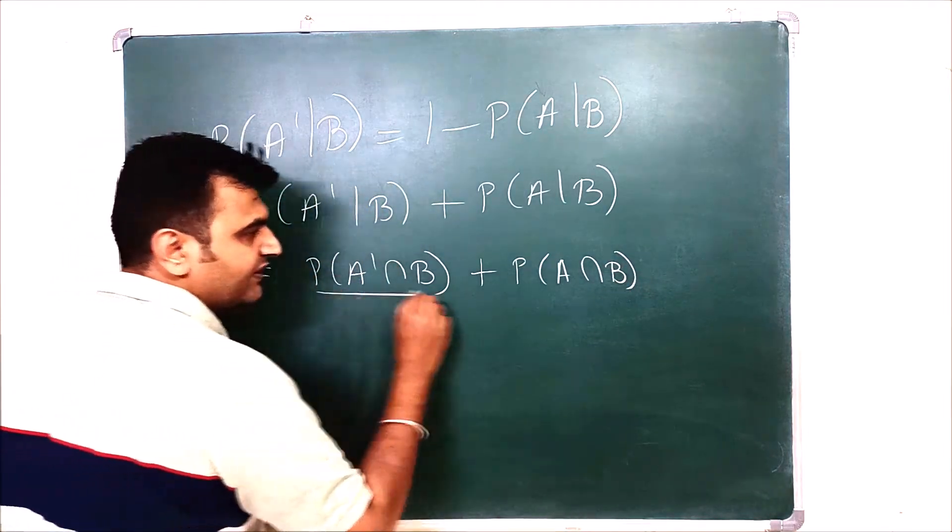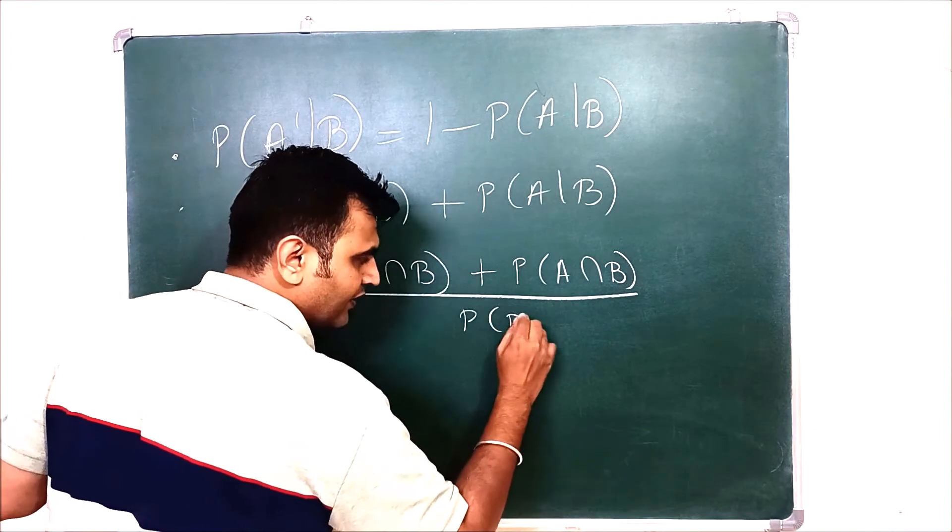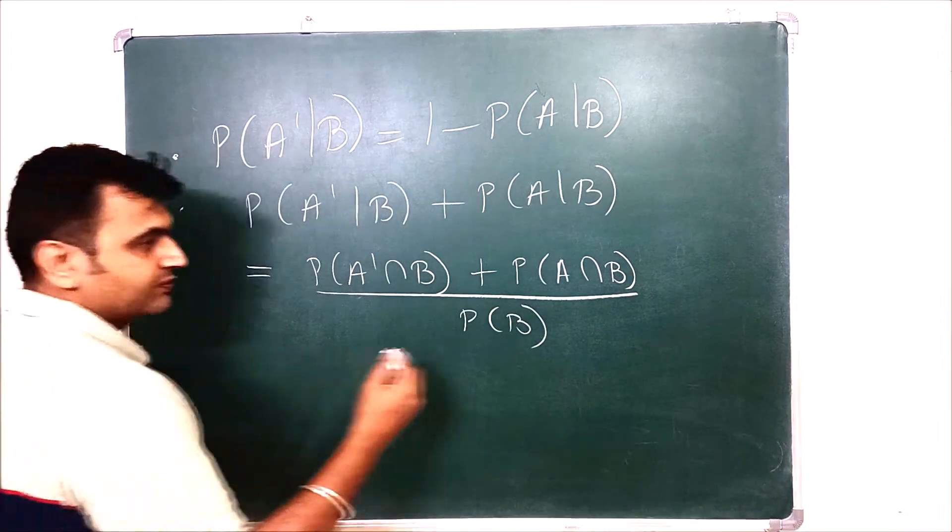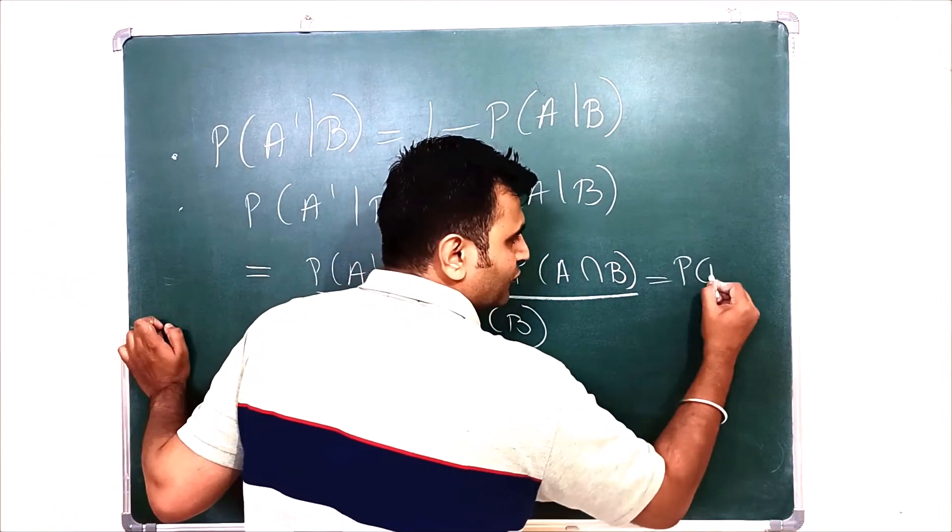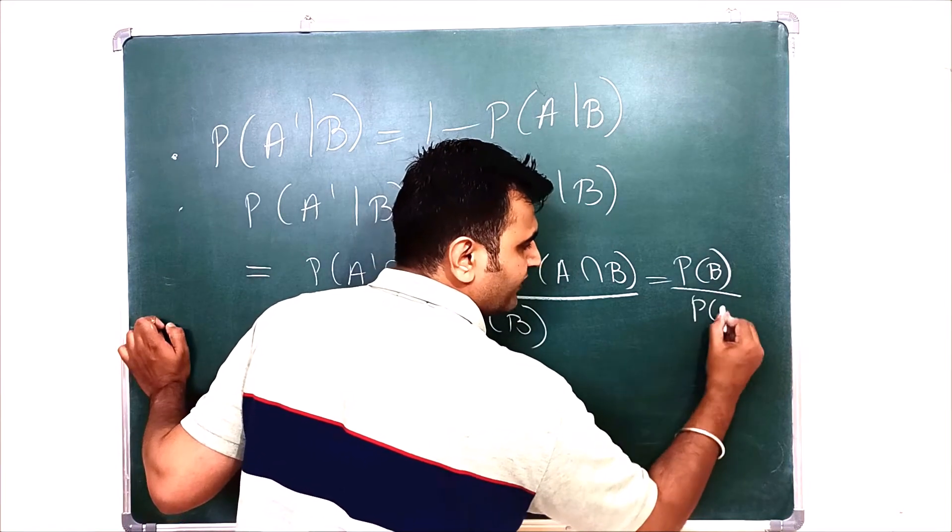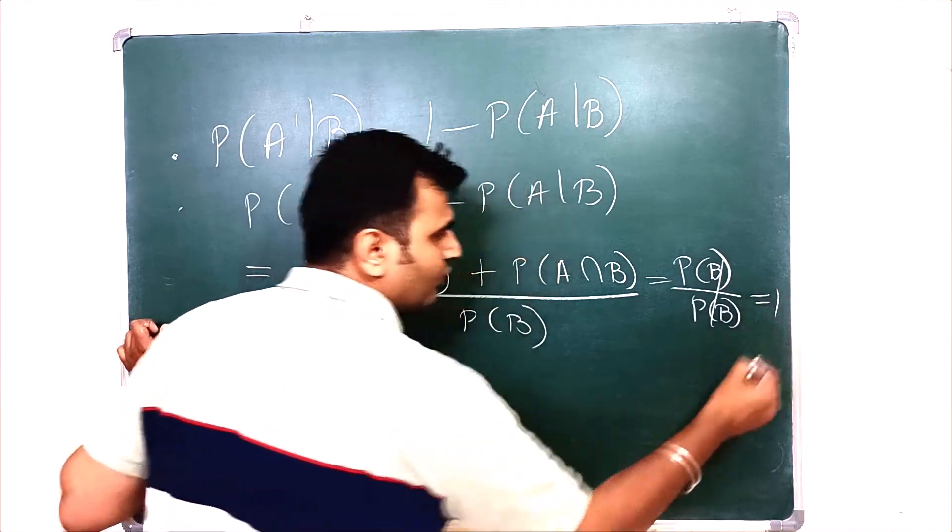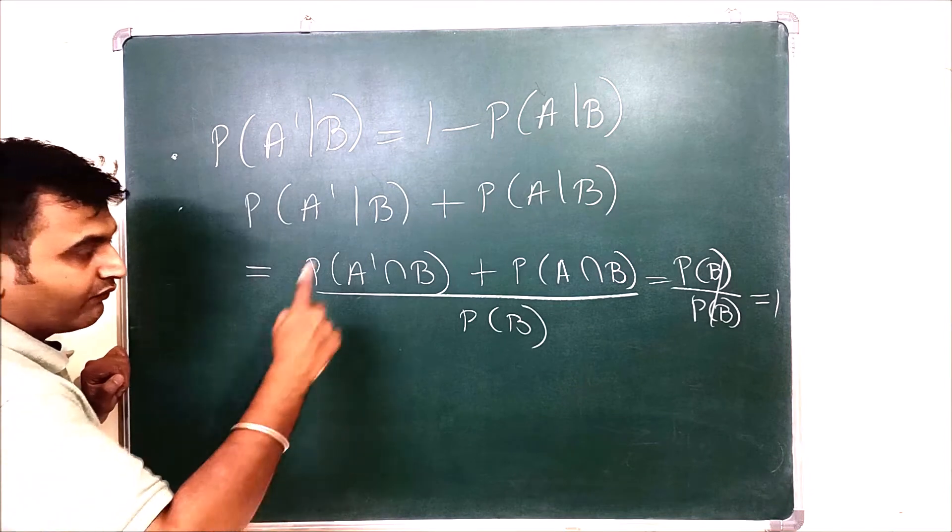Now you can observe your numerator is nothing but probability of B. So probability of B upon probability of B is one.